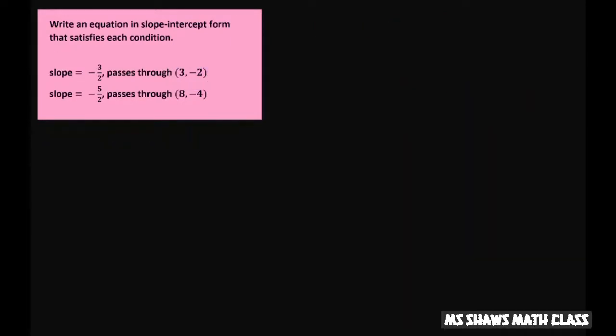Let's try the next one. Y equals mx plus b. Plug in your slope. Y equals negative 5 halves x plus b. Plug in your x and y. Your y is negative 4.